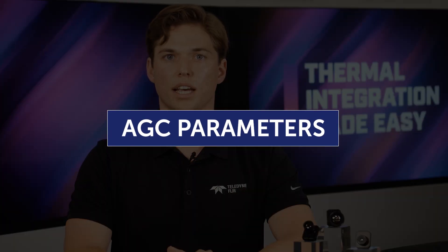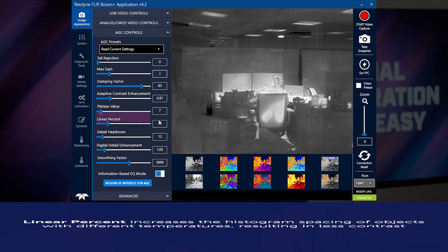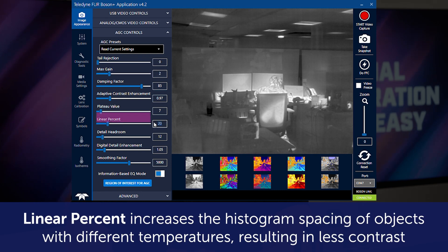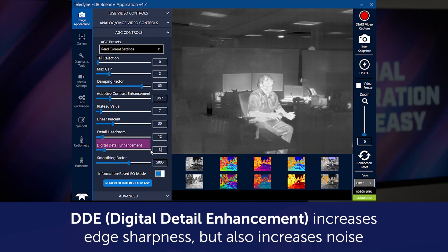Boson has many AGC parameters to tune for your application. Max gain increases contrast in low contrast situations, but will also increase other sources of noise. Linear percent increases the histogram spacing of objects with different temperatures, which will decrease overall contrast in dynamic scenes. Digital detail enhancement, also known as DDE, increases edge sharpness but increases high frequency noise.